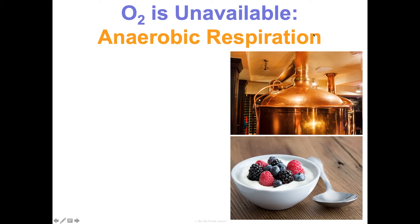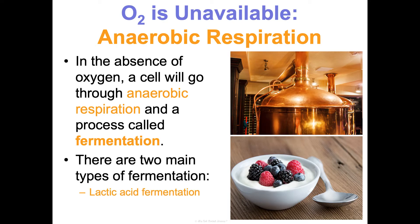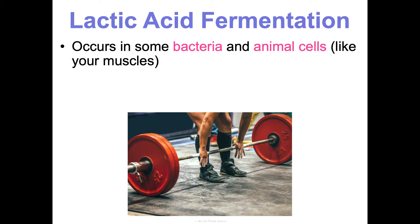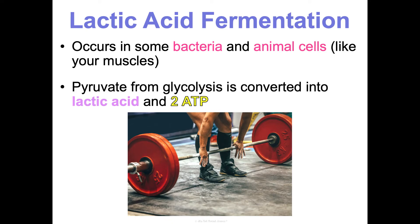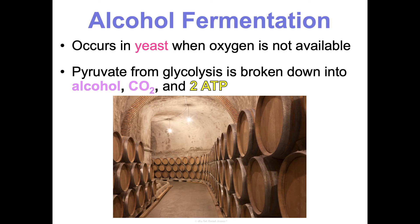Sometimes we don't have oxygen available, so we do anaerobic respiration, also known as fermentation. There are two main types: lactic acid fermentation and alcohol fermentation. Lactic acid fermentation occurs in some bacteria and animal cells like your muscle cells — pyruvates from glycolysis get converted into lactic acid and ATP, but notice how little ATP is made. Alcohol fermentation happens in yeast when oxygen is unavailable and is important for making bread and alcohol — pyruvates are broken down into alcohol, carbon dioxide, and again just two ATP.